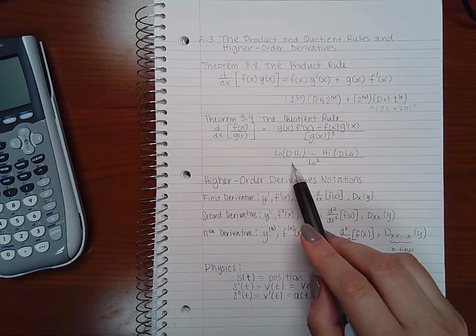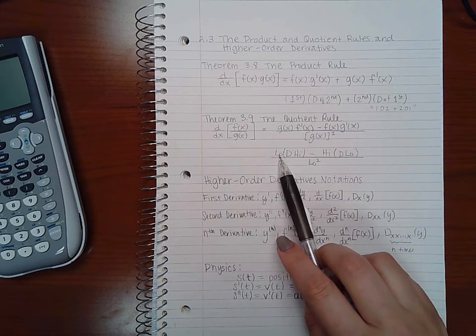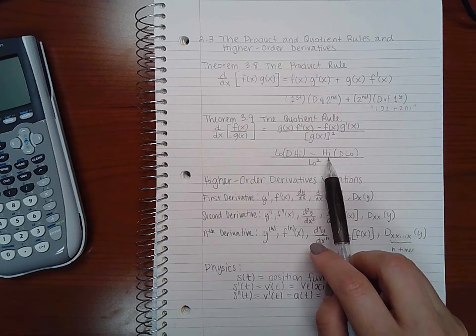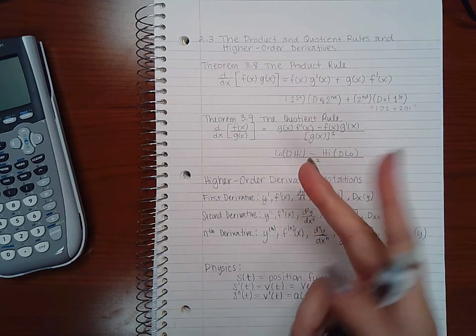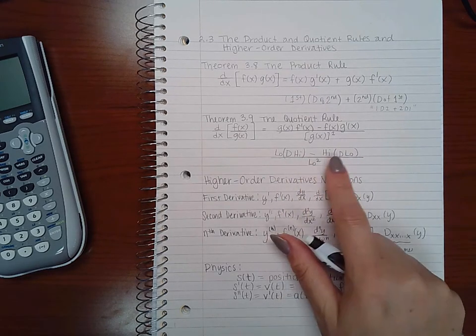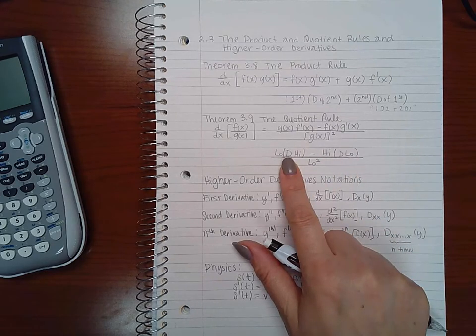And so another mnemonic that I use is low d high minus high d low over low squared. And this order does matter because of that minus sign. If you put the terms in front, it's gonna be wrong.